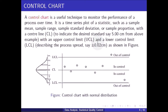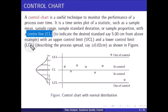A control chart is a useful technique to monitor the performance of a process over time. It is a time series plot of a statistic — such as sample mean, sample range, sample standard deviation, or sample proportion — with a central line (CL) to indicate the desired standard, for example 5.00 cm, along with an upper control limit (UCL) and a lower control limit (LCL).